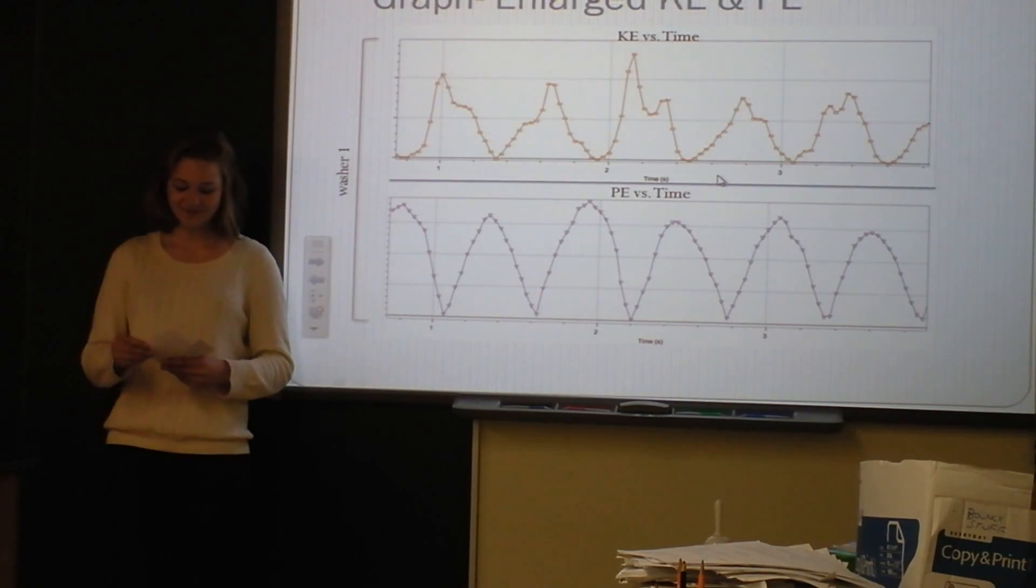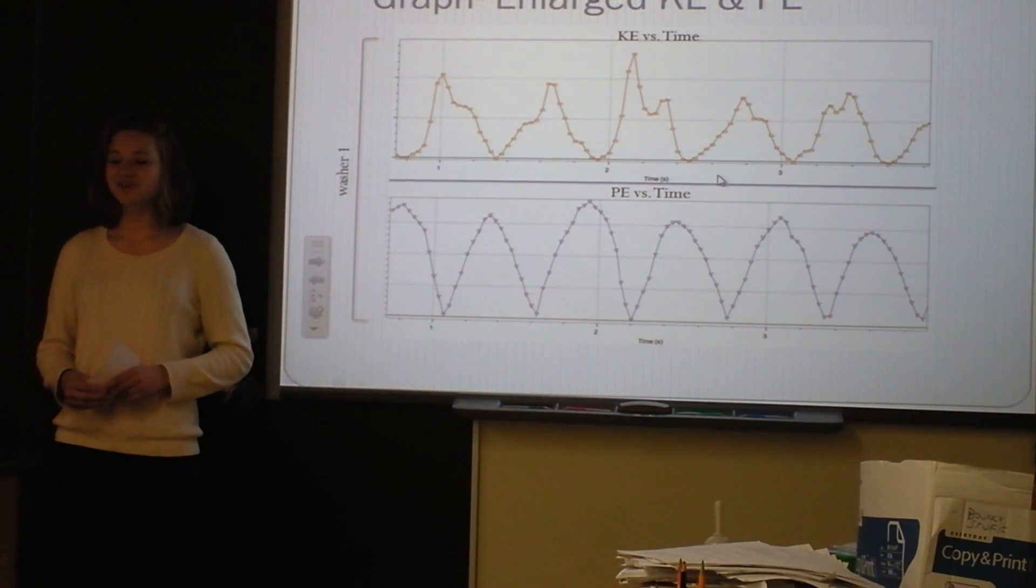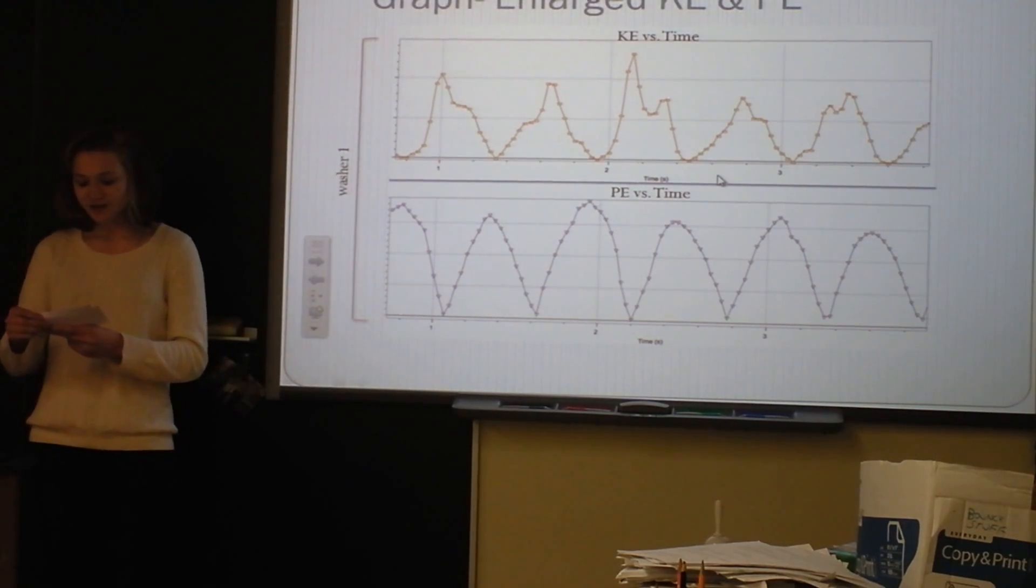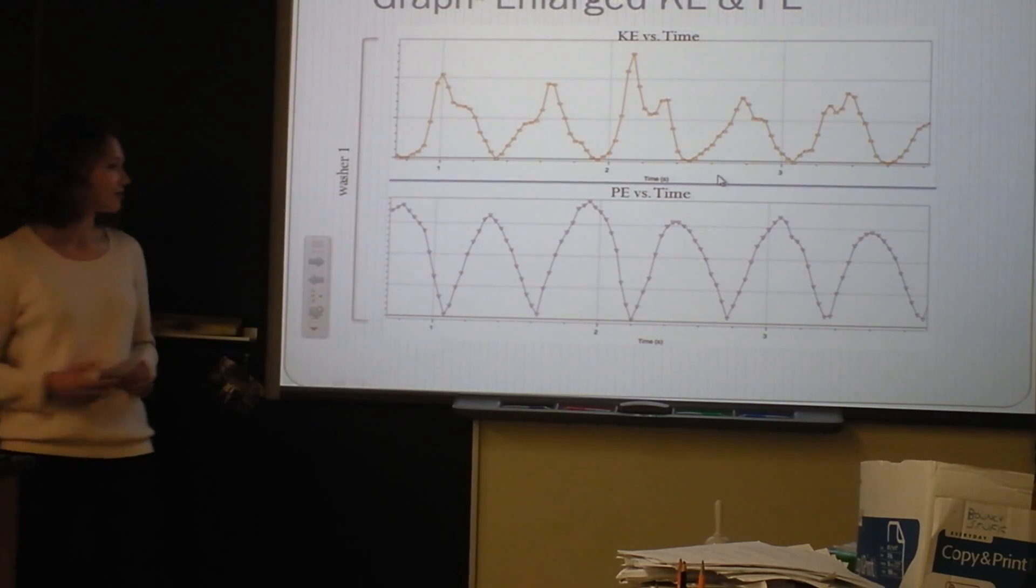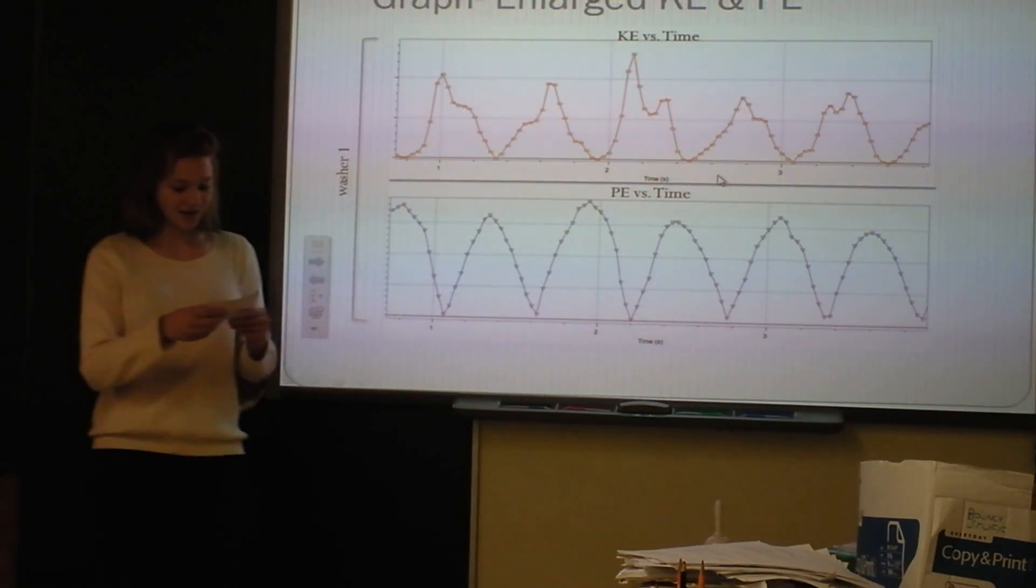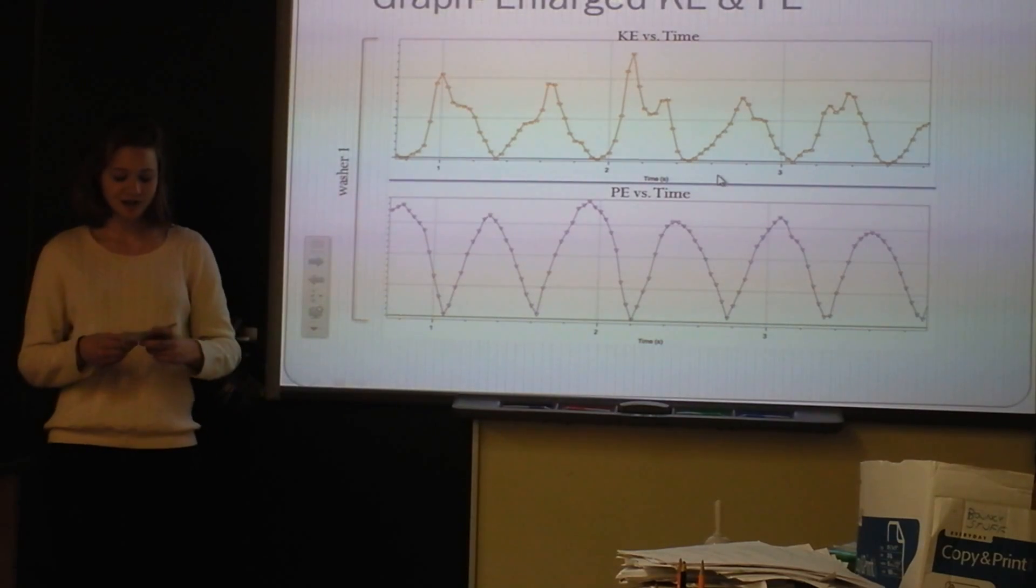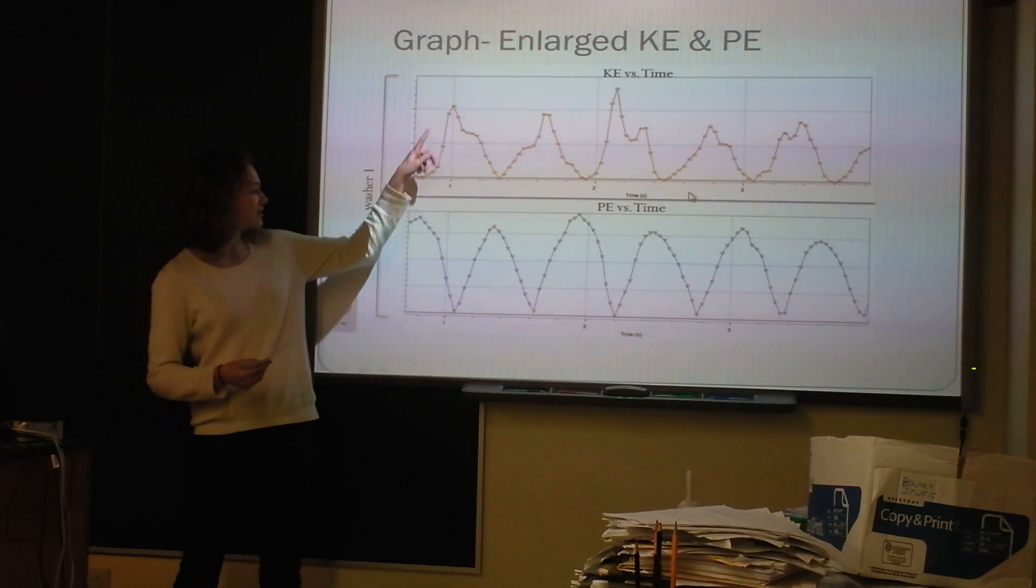And this is my favorite graph because it shows the enlarged transfer of energies. So this is just one washer, for example, and the same happened with the second washer, but for time purposes, just explaining one. So the top graph is kinetic energy versus time, and the bottom graph is potential energy versus time. So as you can see, they kind of look like mirror images, which is really cool. So energies are transferred steadily as shown by the smooth peaks and valleys. So right here and like right here. And that's when it's transferred steadily, and when it's transferred abruptly at the equilibrium point, it is shown by jagged peaks and valleys.